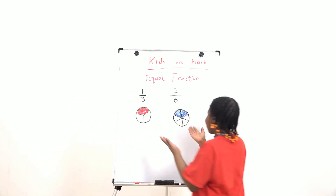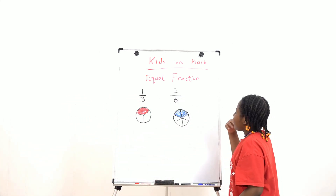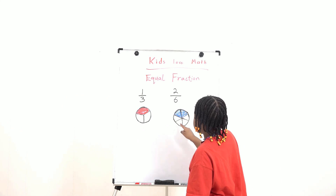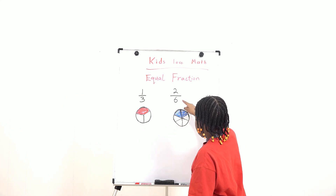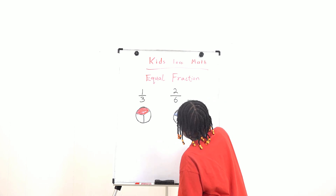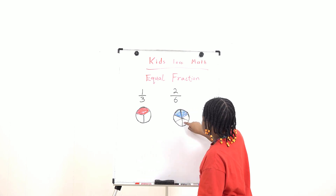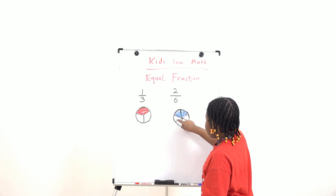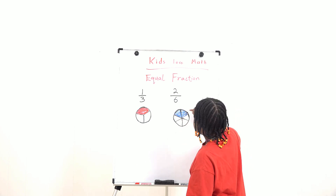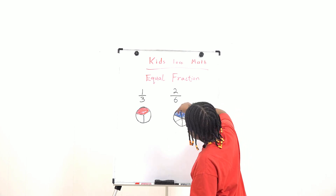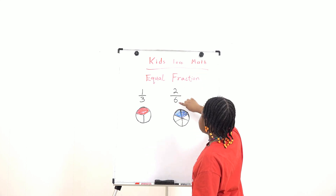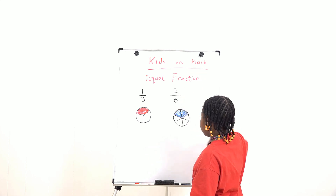But over here, there are 6 parts at the denominator. And let's assume 1, 2, 3, 4 is gone. That means 2 out of 6 is remaining.